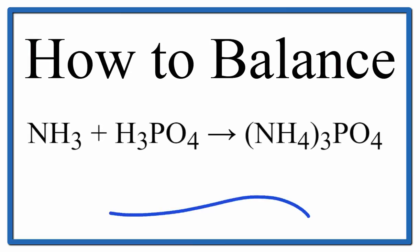To balance this equation, ammonia plus phosphoric acid yields ammonium phosphate. Let's add up the atoms on both sides of the equation.